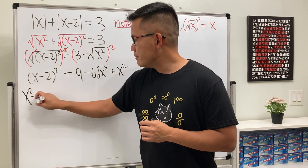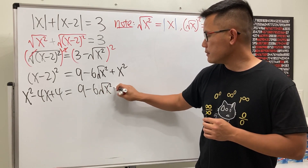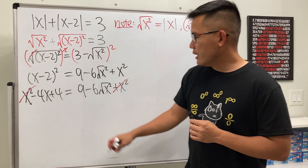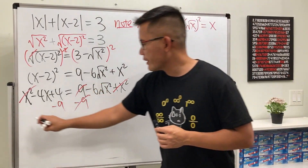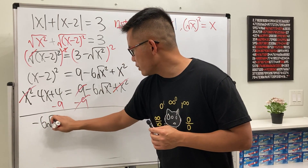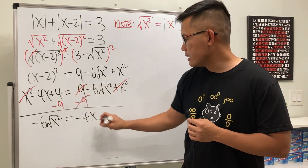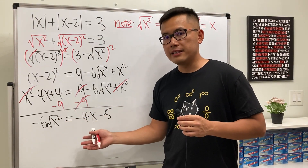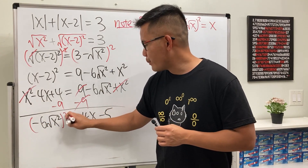Expanding the left side: x² − 4x + 4 = 9 − 6√(x²) + x². The x² terms cancel from both sides, and subtracting 9 from both sides leaves: −6√(x²) = −4x − 5. We could divide by −6 but that gives fractions, so let's square both sides instead.